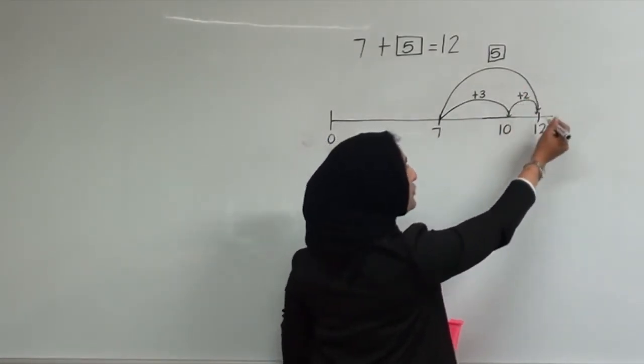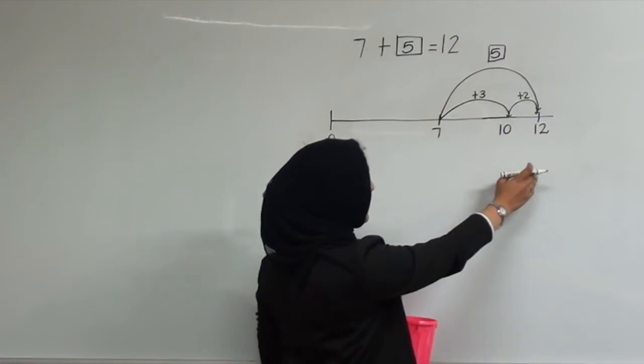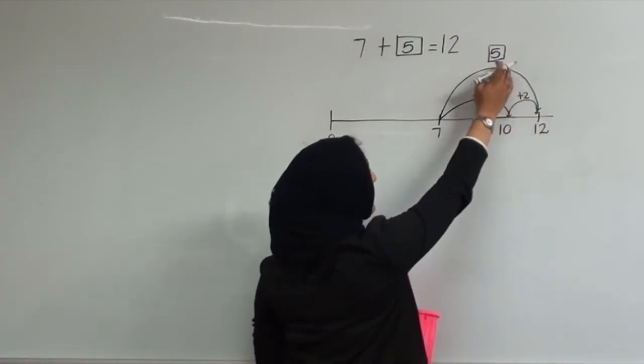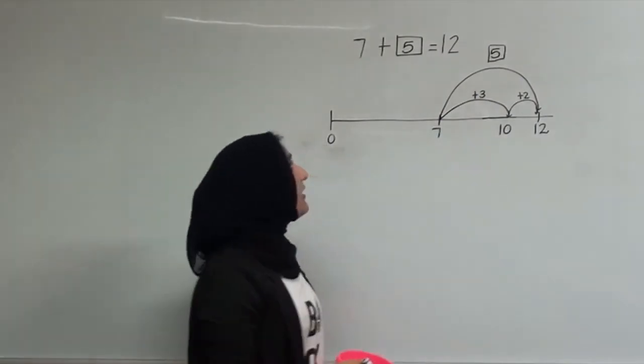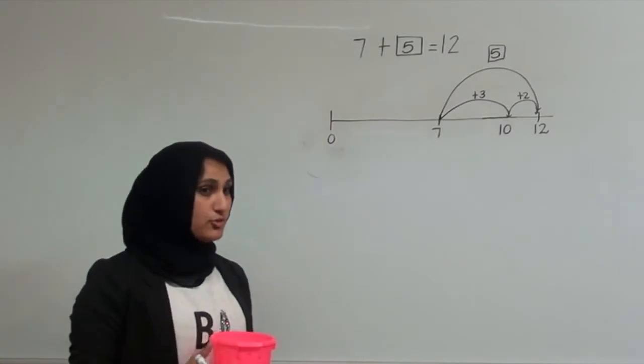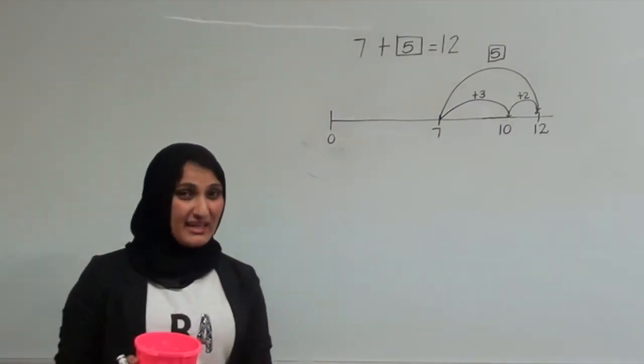Plus a jump of 2 to get to 12. Together, a jump of 3 and a jump of 2 makes 5. Therefore, I've added 5 cubes to my pot to get to 12 cubes, which are in here.